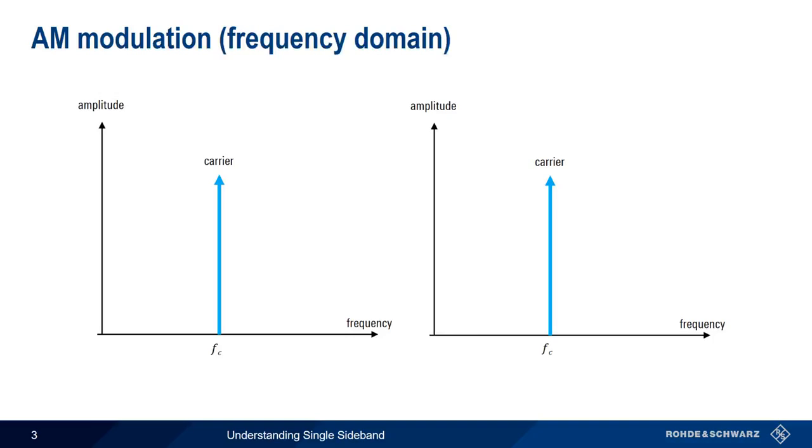In the frequency domain, the information in an AM signal is contained in so-called sidebands that appear both above and below the carrier frequency. If we use a simple 1000 Hz sine wave signal as a modulation source, this modulating signal appears as two tones in spectrum, 1000 Hz above and 1000 Hz below the carrier. Our total signal width is twice the modulating frequency.